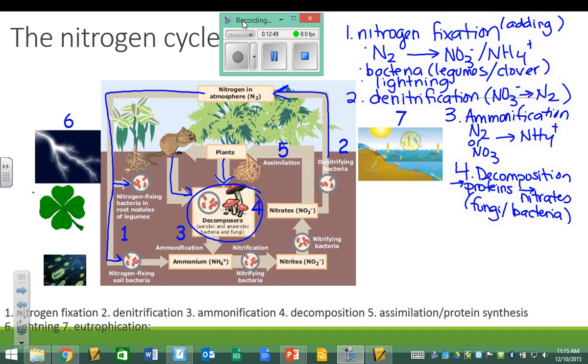The opposite of decomposition is process number five, assimilation. In assimilation, you see the arrow going back up to the plants. This is where plants take proteins that got decomposed in the soil into nitrates and then make new proteins out of them again. So assimilation is really protein synthesis.